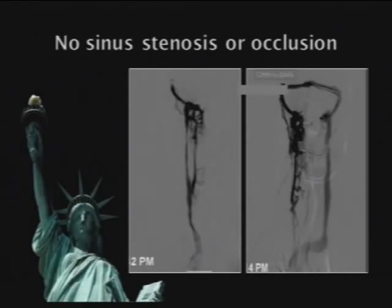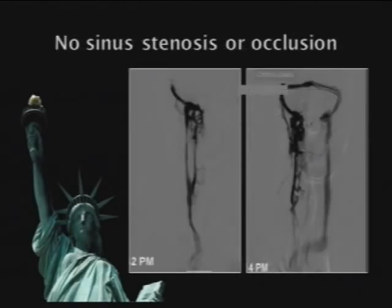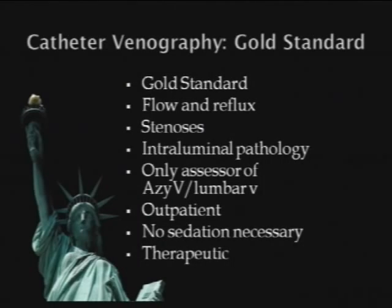Here's a patient with incomplete visualization of the dural sinuses on MRV, and yet when we inject the right jugular vein — this narrow jugular vein — we're able to see that the dural sinuses are quite normal. What initially appeared to be insignificant narrowing is, in fact, not insignificant. It is really abnormal. Catheter venography is the gold standard for studying anatomy and pathological imaging.